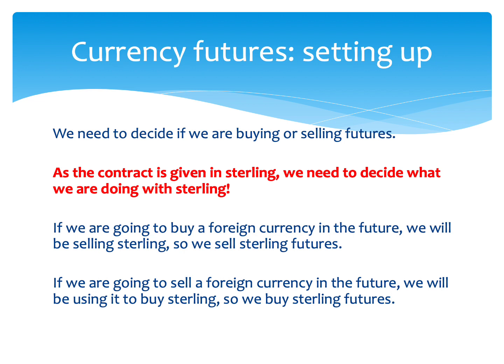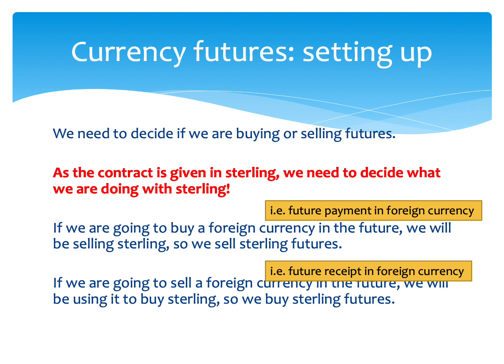For example, if you're going to buy a foreign currency in the future — say we've got a future payment in dollars — we're going to be selling sterling to the bank, so we sell sterling futures. On the other hand, if we had a future receipt in a foreign currency, we're going to have to sell that foreign currency to the bank, so the bank is essentially selling us sterling. We're going to be buying sterling, so we buy sterling futures. It's important that you do this from our point of view. So: if we're going to make a future payment, you sell sterling futures now; and if you've got a future receipt, you buy sterling futures now for your hedge.